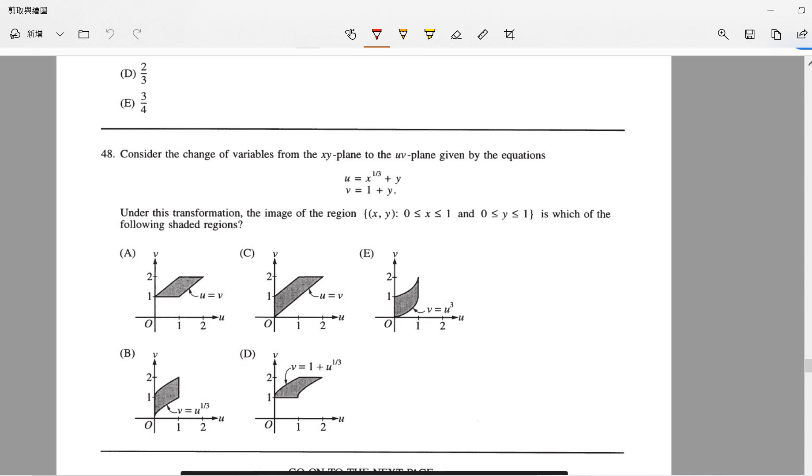And what does the uv look like? Notice that the smallest value for v is 1, and the largest value for v is 2.